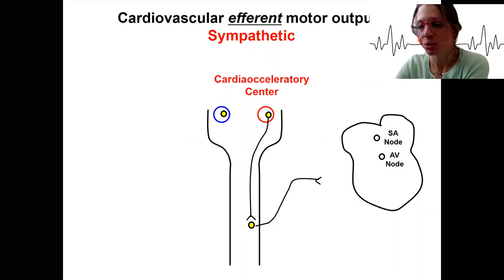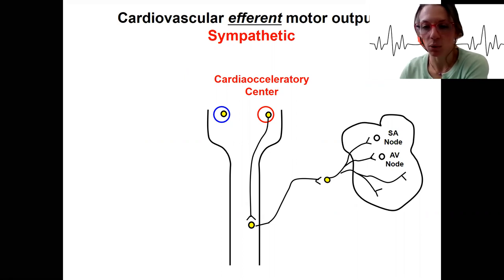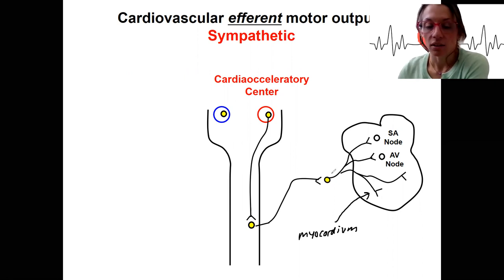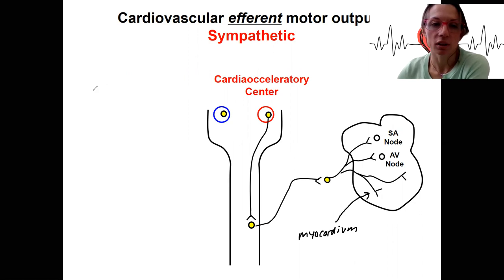It also is going to — the same neurons are going to contact the myocardium. Why do we care about this? In addition to altering heart rate, the sympathetic innervation can also alter contractility.